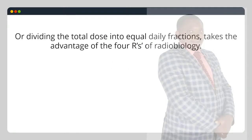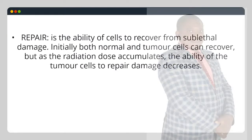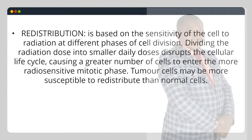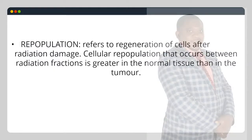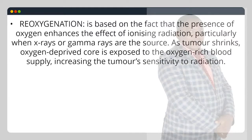Fractionalization, or dividing the total dose into equal daily fractions, takes advantage of the 4 R's of radiobiology. Repair is the ability of cells to recover from sublethal damage; initially both normal and tumor cells can recover, but as the radiation dose accumulates, the ability of tumor cells to repair damage decreases. Redistribution is based on the sensitivity of the cell to radiation at different phases of cell division; dividing the dose into smaller daily doses causes a greater number of cells to enter the more radiosensitive mitotic phase. Repopulation refers to regeneration of cells after radiation damage; cellular repopulation between fractions is greater in normal tissue than in the tumor. Reoxygenation is based on the fact that the presence of oxygen enhances the effect of ionizing radiation; as the tumor shrinks, the oxygen-deprived core is exposed to the oxygen-rich blood supply, increasing the tumor's sensitivity to radiation.